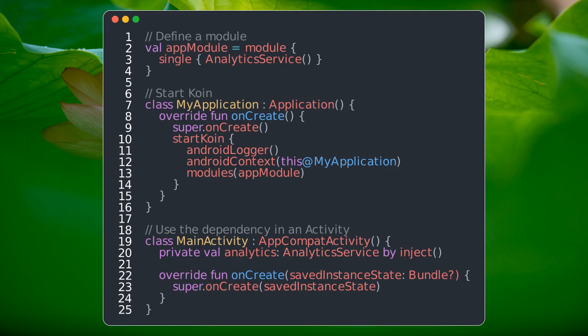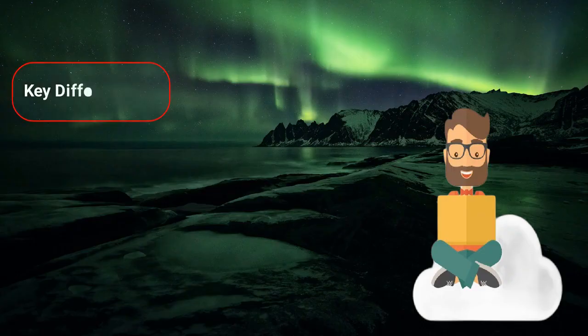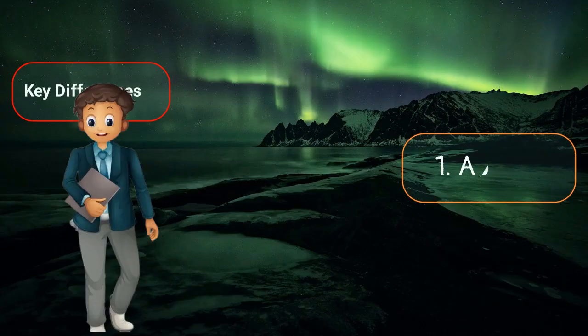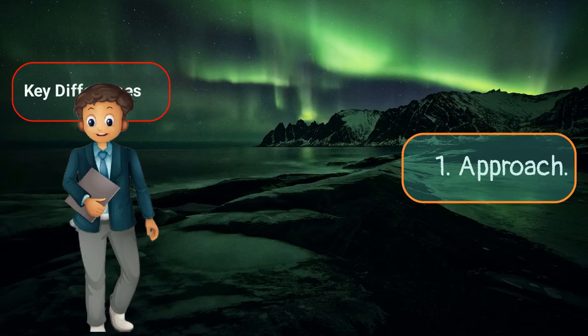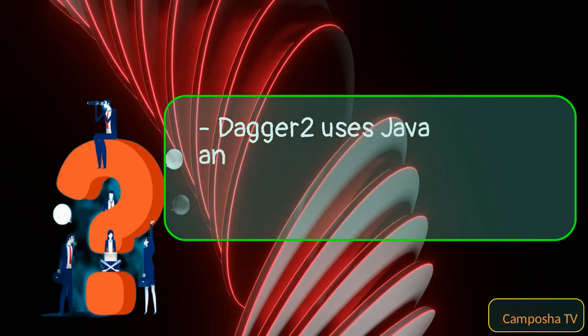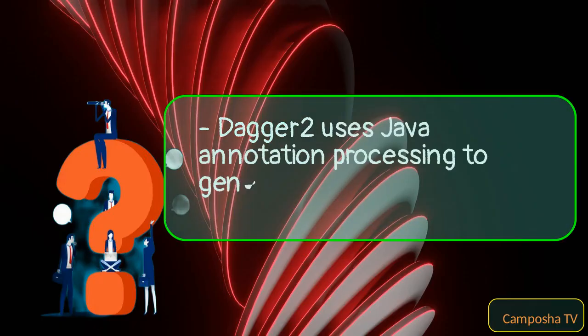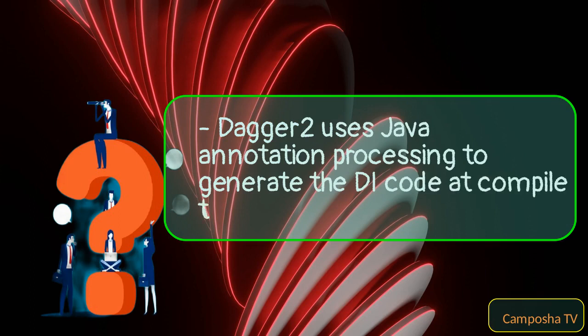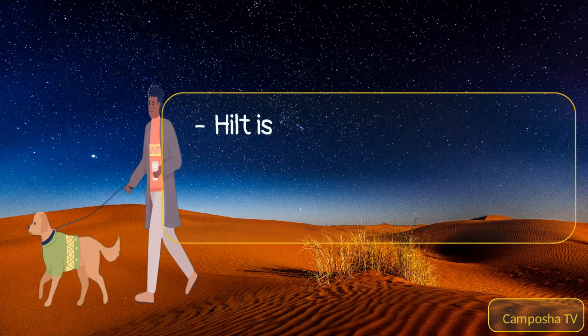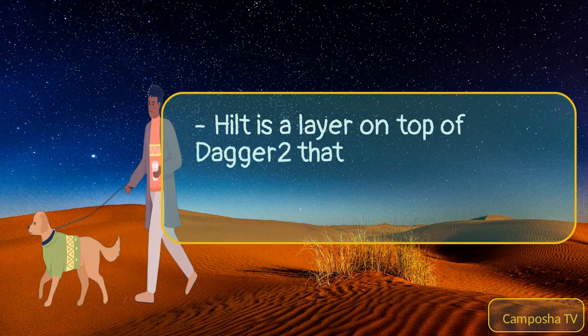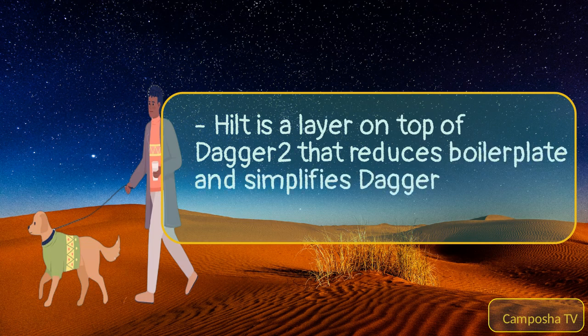Koin uses a DSL for module declaration and allows you to retrieve dependencies with the inject delegate, without the need for generated code or annotations. Key differences — approach: Dagger2 uses Java annotation processing to generate the DI code at compile time.